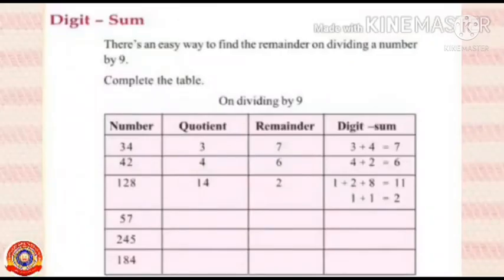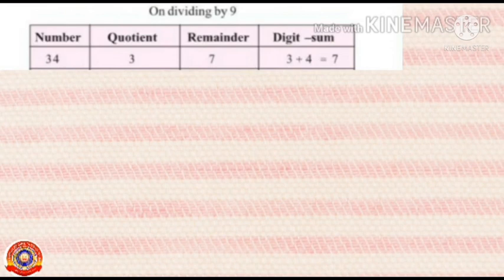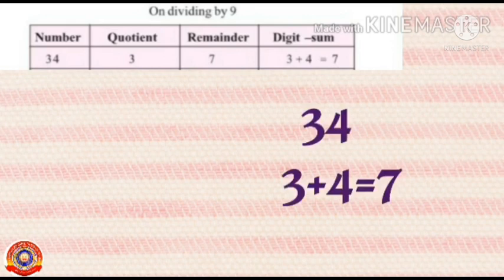First activity, digit sum. Children, there is an easy way to find the remainder on dividing a number by 9. Look at this table. On dividing by 9, first number is 34. To find its remainder, just add the digits in 34. That means 3 plus 4 equals 7. Therefore, the remainder is 7.